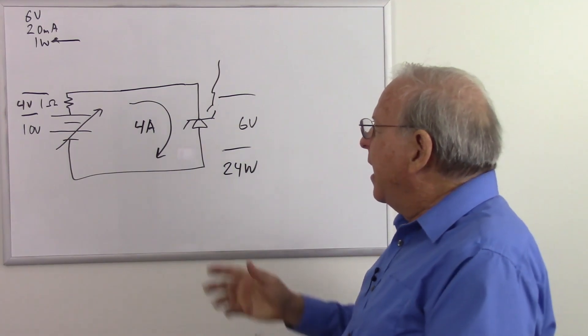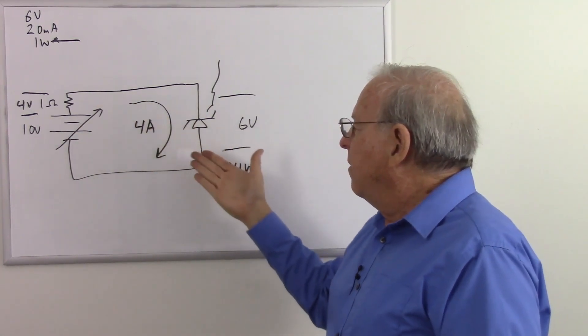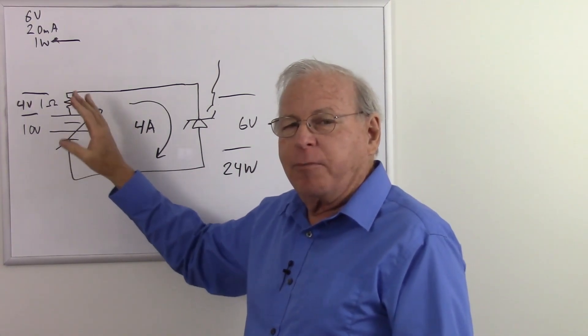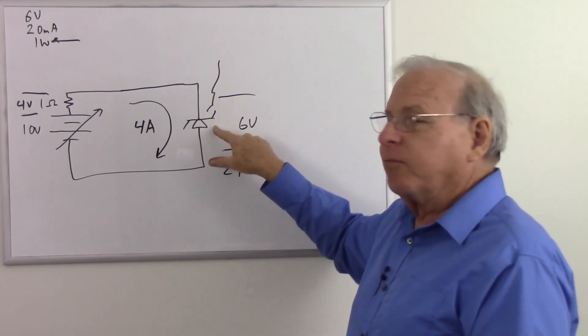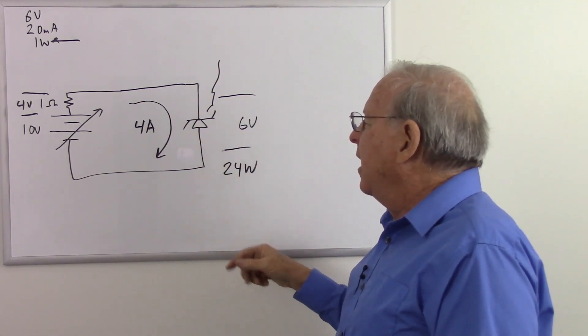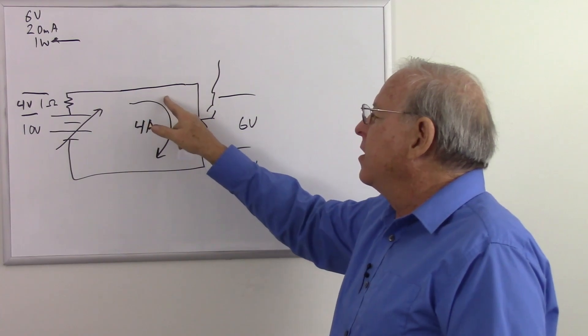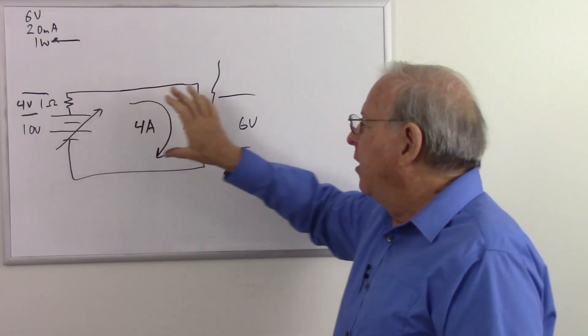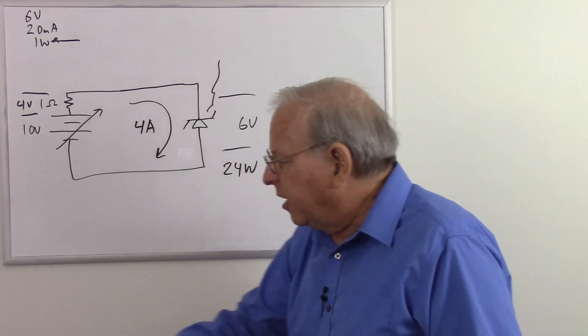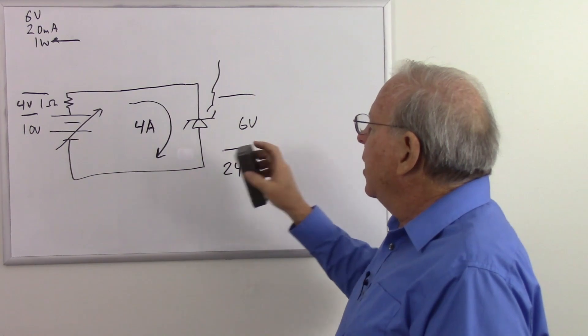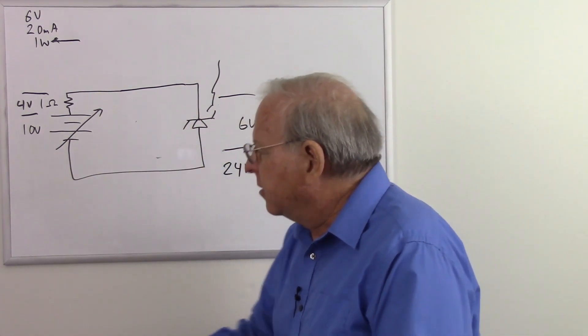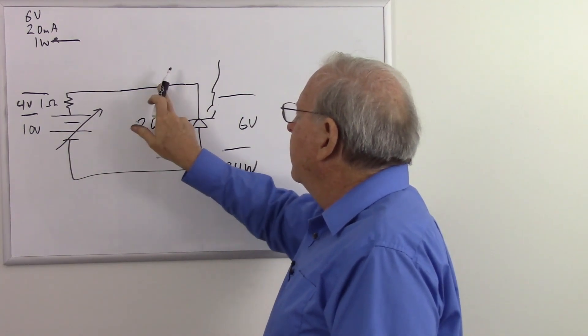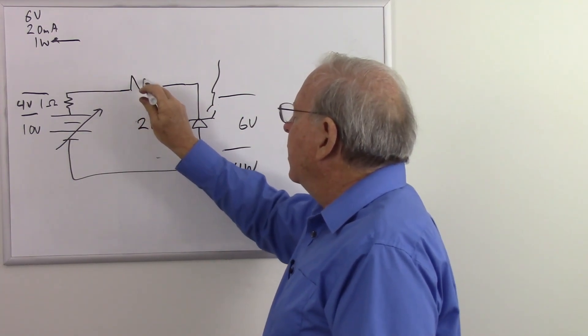So we need to have some current limiting for two reasons. One, without the current limiting, unless this happens to be a very, very high internal resistance or output impedance, we're going to let the smoke out of our Zener diode in the first place. And secondly, we do want to have the correct nominal current, which is based on what's our source voltage and what is our Zener diode voltage and the current. So once again, with this particular Zener diode, we want this current to be nominally about 10 milliamps of 20 milliamps.